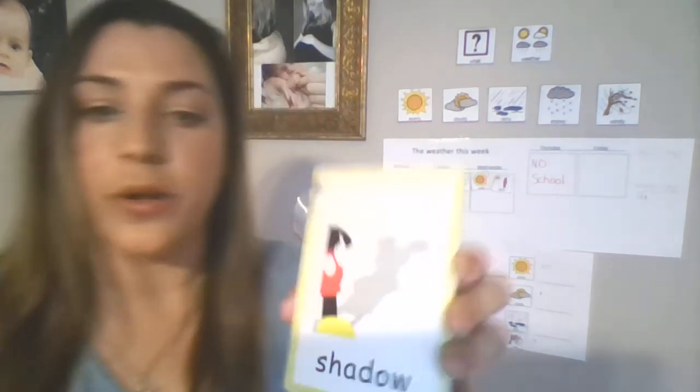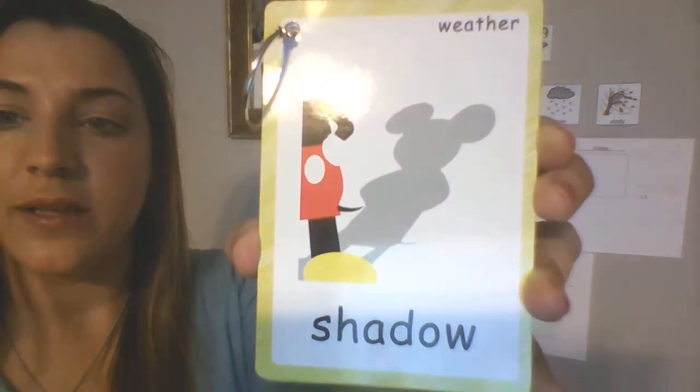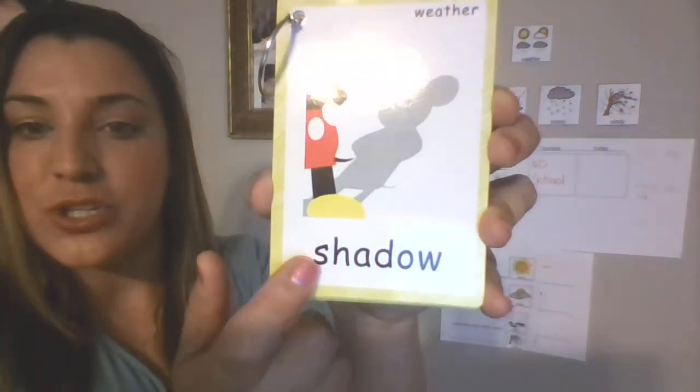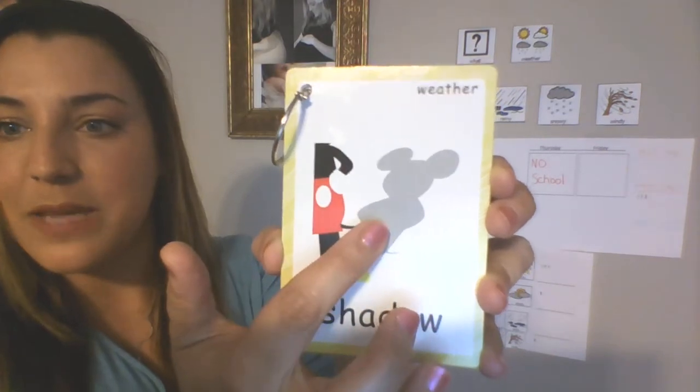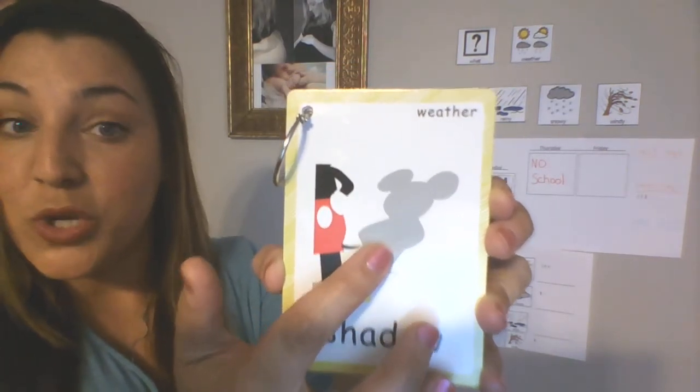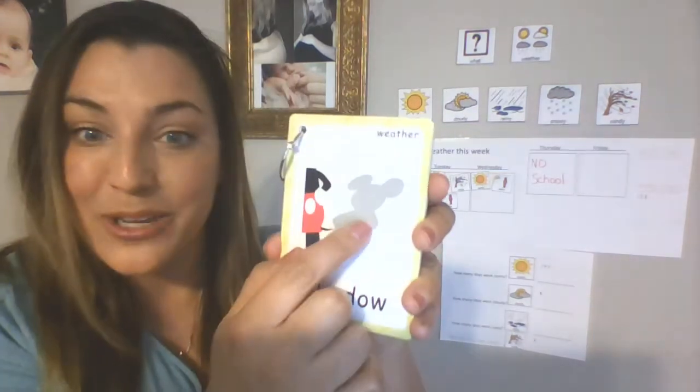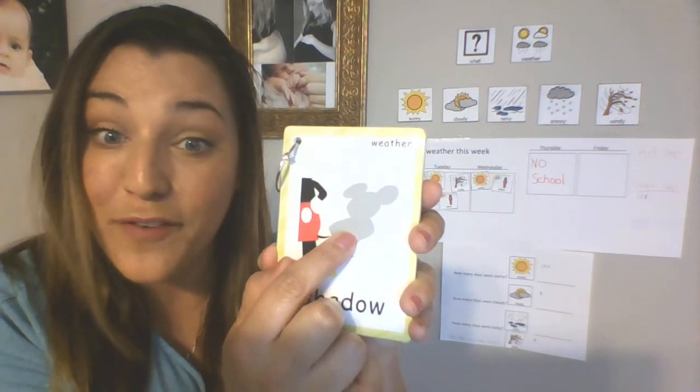Okay, friends. So that is our weather. And I do want to say, if you can go outside today, when the sun is in the sky, I want you to look for your shadow. Shadow. This is Mickey Mouse. And that's Mickey Mouse's shadow. So when you're in the sun with your parents, look up in the sky and see if you see the sun. And then you can look on the ground and you might see your shadow. That would be a lot of fun, friends.